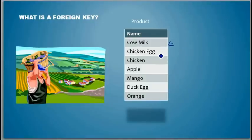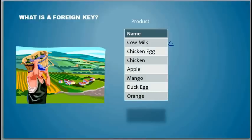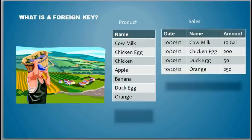He can sell cow milk, chicken egg, chicken, apple, mango, duck egg, and orange. He produces these things, displays them in a shop near his farm, and sells them. He hires a salesperson, and each and every day whoever sells the items needs to show him what they have sold.